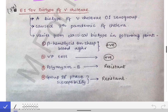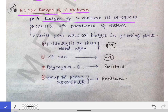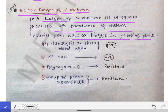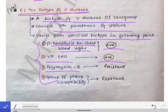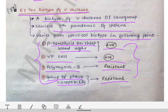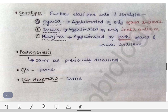The next short topic is the El Tor biotype of Vibrio cholerae. The El Tor biotype is a biotype of the Vibrio O1 serogroup, and it is known to have caused the seventh pandemic of cholera. To differentiate it from the classical biotype, four tests are used: beta hemolysis on sheep blood agar is positive, the VP test is positive, it is resistant to polymyxin B, and it is resistant to group 4 bacteriophage.